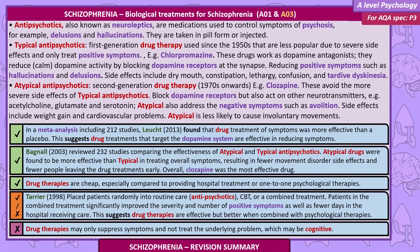Atypical antipsychotics are less likely to cause involuntary movements. In a meta-analysis of 212 studies, Lachette found drug treatment of symptoms was more effective than a placebo, suggesting drug treatments targeting the dopamine system are effective. Bagnell reviewed 232 studies and found atypical drugs were more effective than typical in treating overall symptoms, resulting in fewer movement disorder side effects and fewer patients leaving treatment early — clozapine was the most effective drug overall. Drug therapies are cheap compared to hospital treatment or psychological therapies. Tarrier placed patients into routine care, antipsychotics, CBT, or combined treatment; patients in combined treatment significantly improved in positive symptom severity and had fewer days in hospital, suggesting drug therapies are effective but better when combined with psychological therapies. However, drug therapies may only suppress symptoms and not treat the underlying cognitive problem.